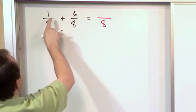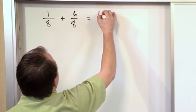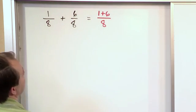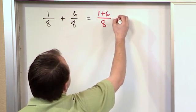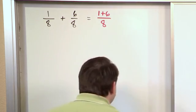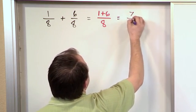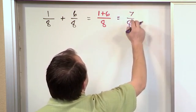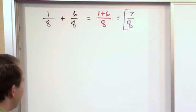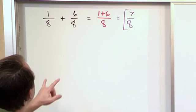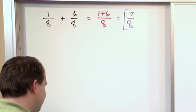On the top, you add the numerators. So what you have on top is one plus six. One plus six is seven, and the bottom is eight. So the answer to this fraction addition is seven-eighths. Again, the whole thing centers around the fact that the denominators of these fractions have to be the same.